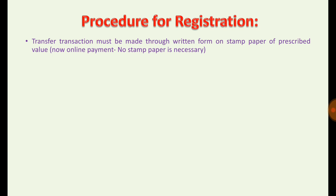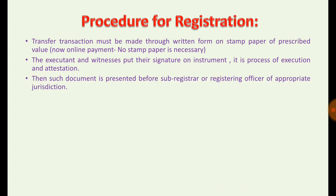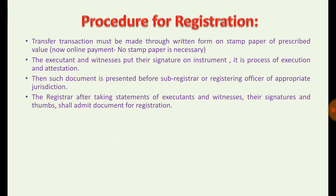The transaction document made by parties must be properly signed — executed by parties to the document and witnesses, with thumb impressions impressed on the document. After execution and attestation are completed, the document must be presented before the sub-registrar for registration and submitted to the office of proper jurisdiction. The registrar takes the statement of executors and witnesses, takes their signatures, and then admits the document for registration.